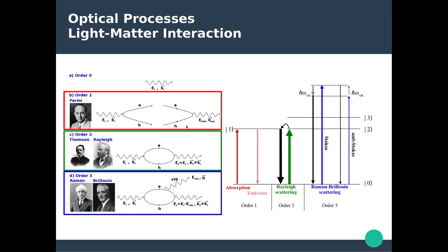You can also do the complementary process: the emission of light from the recombination of electrons and holes. This energy diagram shows the first-order process — absorption, where an electron is promoted from a ground state to an excited state, or emission, where an electron on an excited state relaxes to the ground state and emits a photon during the transition.